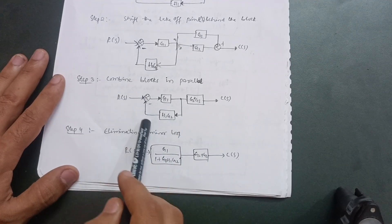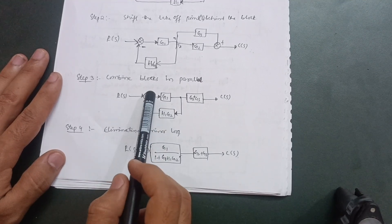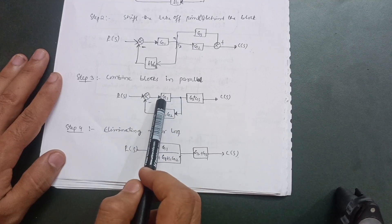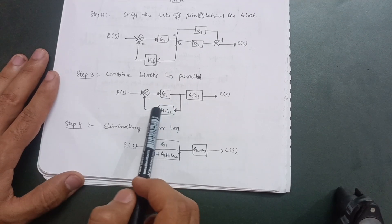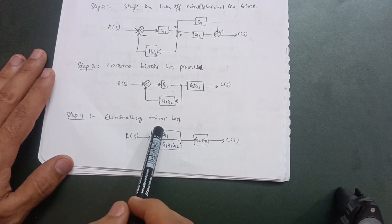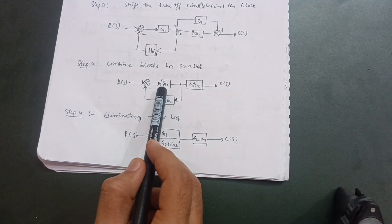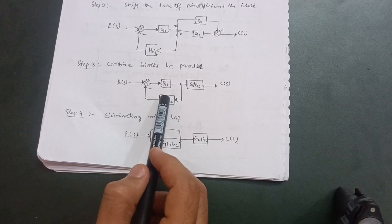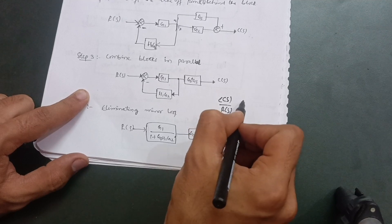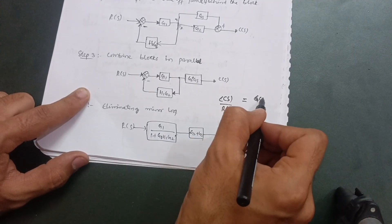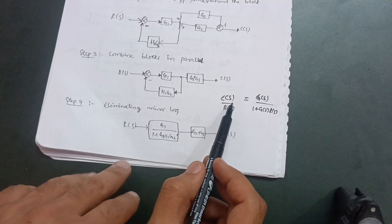Now observing this, we have a minor loop or canonical form. As mentioned in the previous video, the canonical form has a summing point, one takeoff point, a forward path, and a feedback path. To eliminate this minor loop, we apply the formula: C(s)/R(s) = G(s) / (1 + G(s)·H(s)).